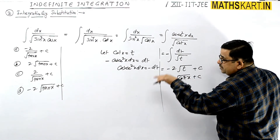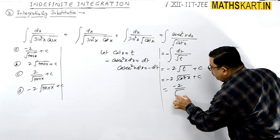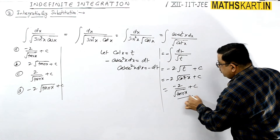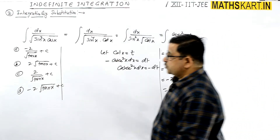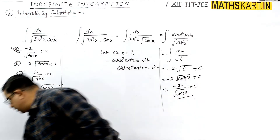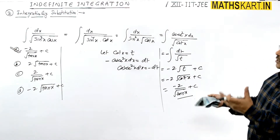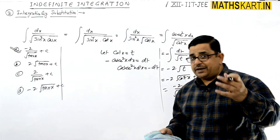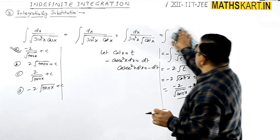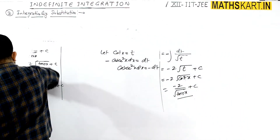The answer in options is written in terms of tan x, so no problem — we write it as minus 2 upon root of tan x. So option A is correct. The key learning here is the same technique; though a similar question was done before, this one is in a slightly different form.